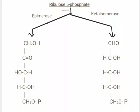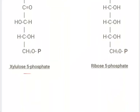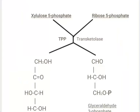From here starts the non-oxidative phase, in which 6 molecules of ribulose-5-phosphate, in the presence of the enzymes epimerase and ketoisomerase, get converted into 4 molecules of xylulose-5-phosphate and 2 molecules of ribose-5-phosphate. Two molecules of xylulose-5-phosphate are consumed in the next step, and the remaining 2 molecules of xylulose-5-phosphate will be consumed in the last step.